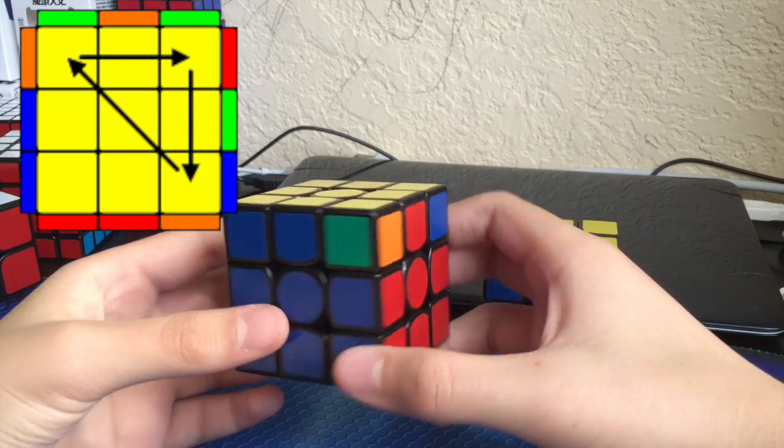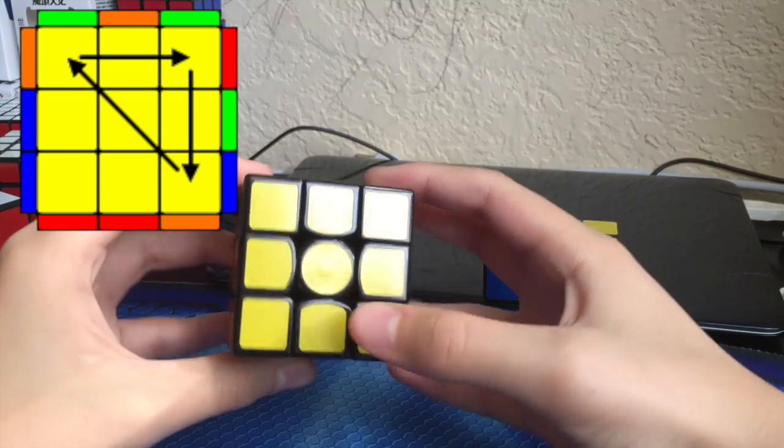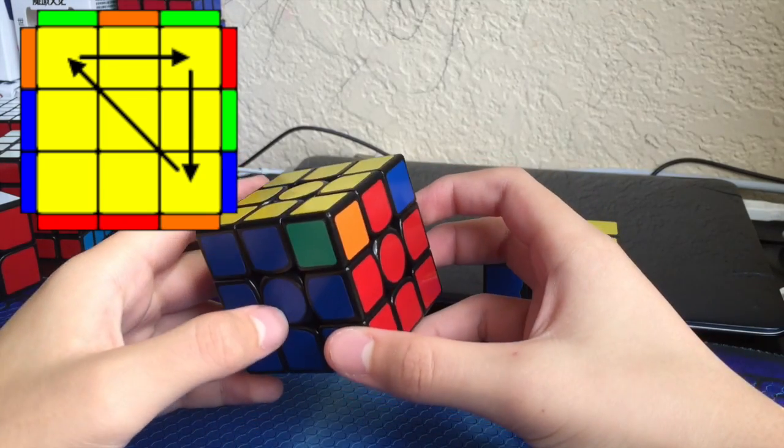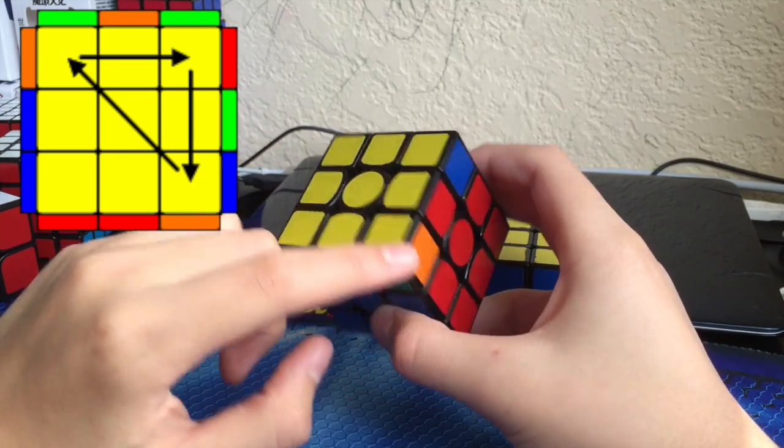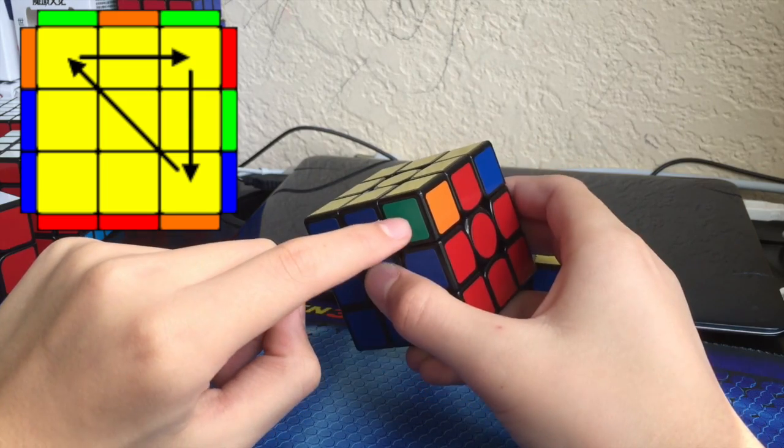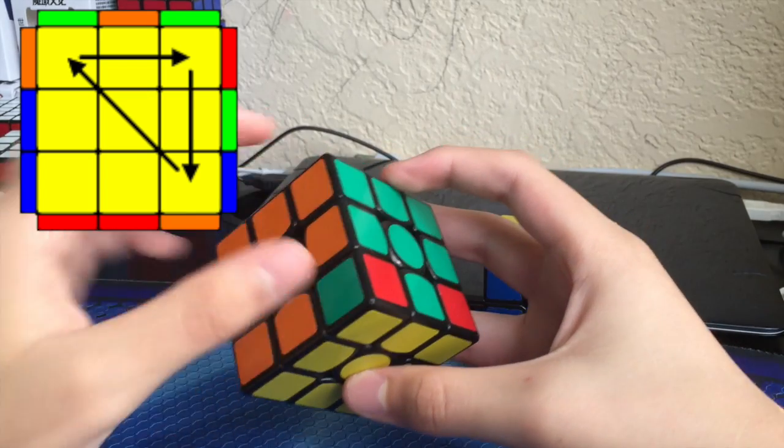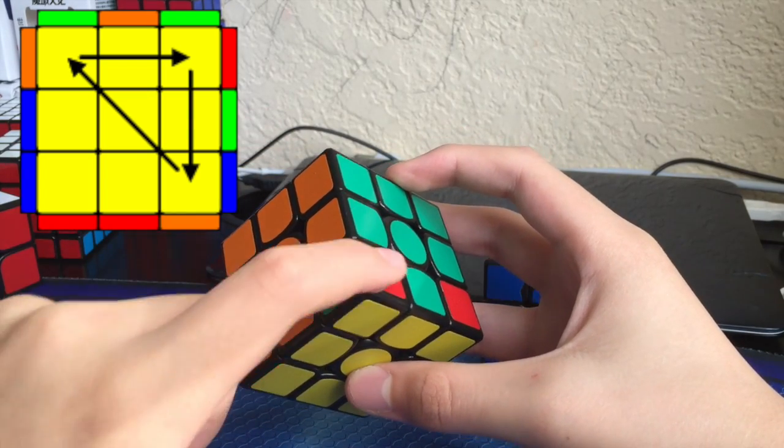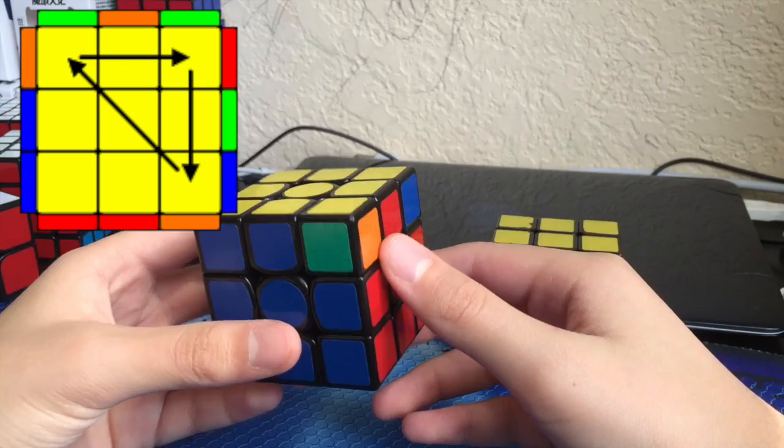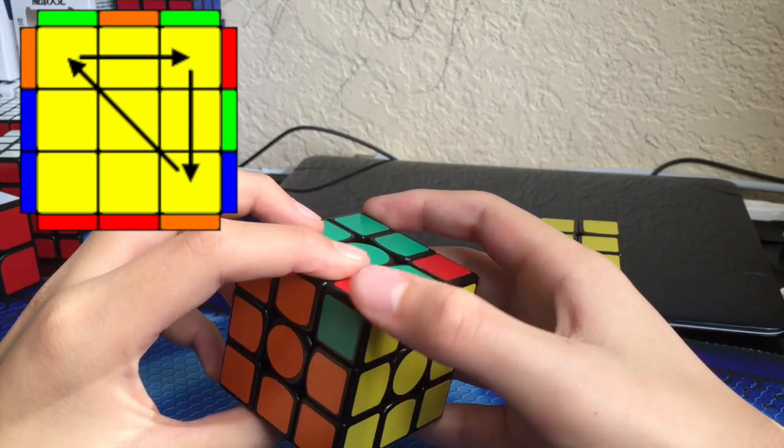The first case is where you have three corners unsolved and you have to cycle them clockwise. What I mean by that is you have this corner right here which is the orange and green corner, and you have to put it in the orange and green slot which is right there. The same goes with this green and red which goes right there, blue and red which goes right there.